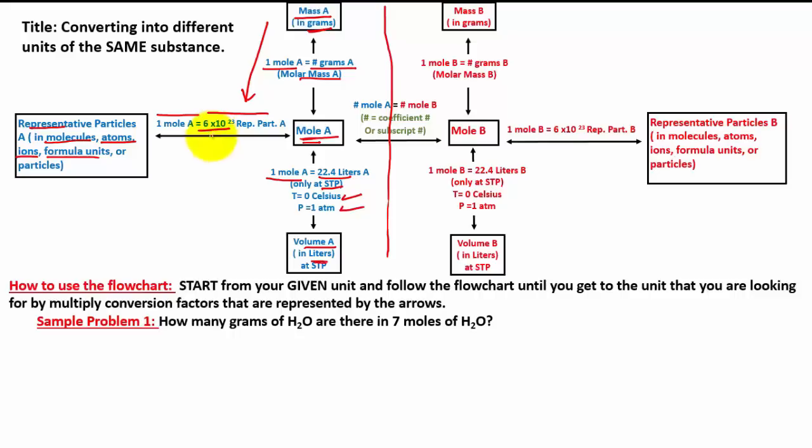We have exactly 6 times 10 to the 23rd representative particles, or in this case, atoms of carbon-12. So this number is also known as the Avogadro number for the scientist who determined this number. So Avogadro number is basically referred to 6 times 10 to the 23rd.